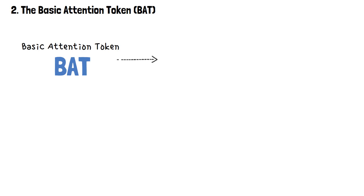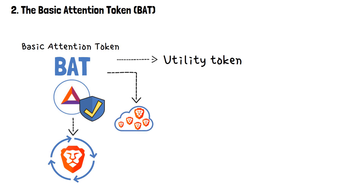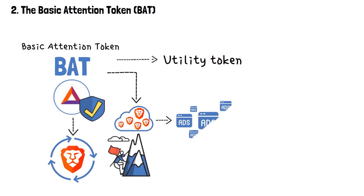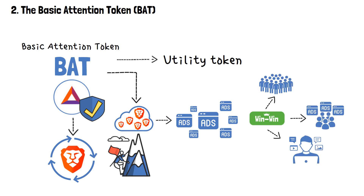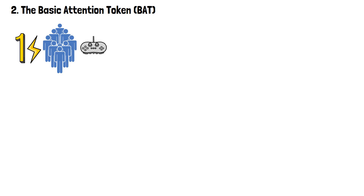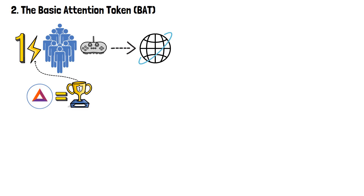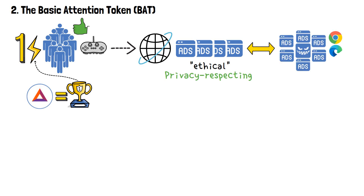Basic Attention Token, or BAT, is a utility token that shapes and ensures the vitality of the Brave Browser ecosystem. BAT was conceptualized to revolutionize how digital advertising operates, providing a win-win solution for users, advertisers, and content creators. First and foremost, it empowers users with a new level of control over their online experience. BAT is the reward that incentivizes users to agree to view ethical, privacy-respecting ads — contrasting with the intrusive ads found in traditional browsers.